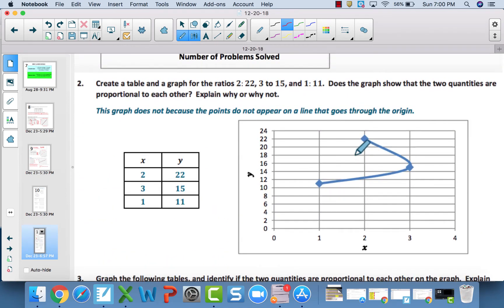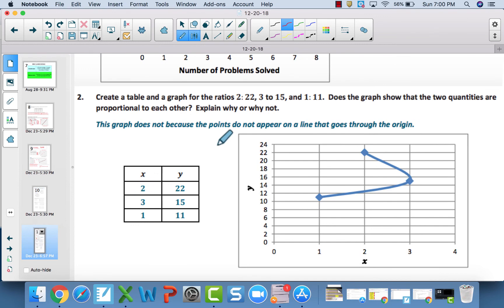For number two, when we graph 2 to 22, 3 to 15, and 1 to 11, this is not proportional at all. It not only does not go through this origin point, the 0, 0, but this is a curve. This is not a nice, straight line. Because it doesn't fit either of the two criteria, this is for sure not proportional at all.